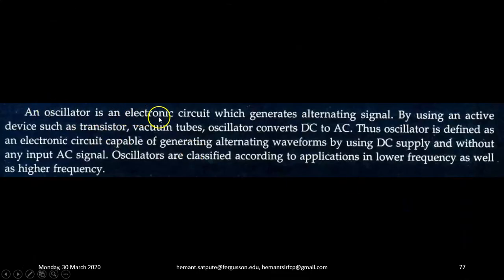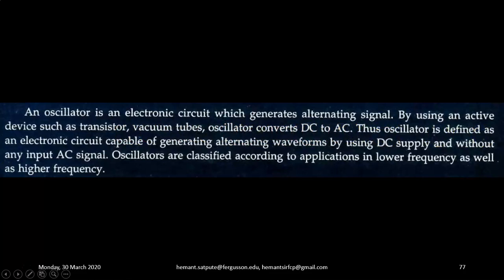An oscillator is an electronic circuit which generates an alternating signal. By using an active device such as a transistor or vacuum tubes, the oscillator converts DC to AC. Thus, an oscillator is defined as an electronic circuit capable of generating alternating waveforms by using a DC supply and without any AC input signal.